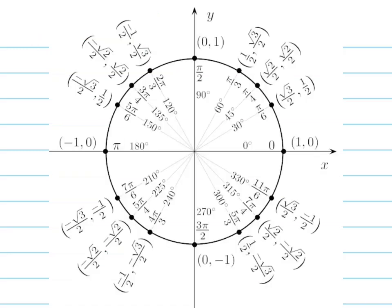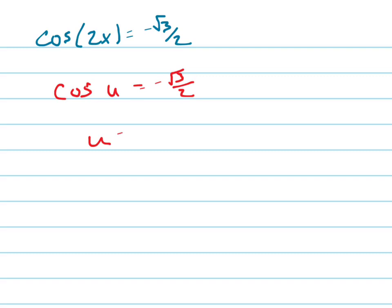We just look at our unit circle, and we look at where the cosine is negative root 3 over 2, which is there and there. And those are our two answers, 5 pi over 6 and 7 pi over 6. u would equal 5 pi over 6 and 7 pi over 6.